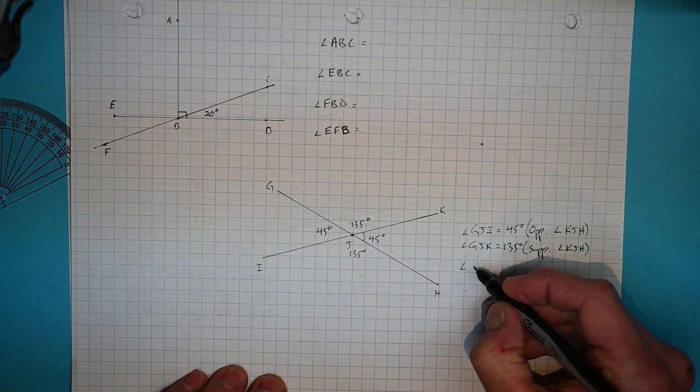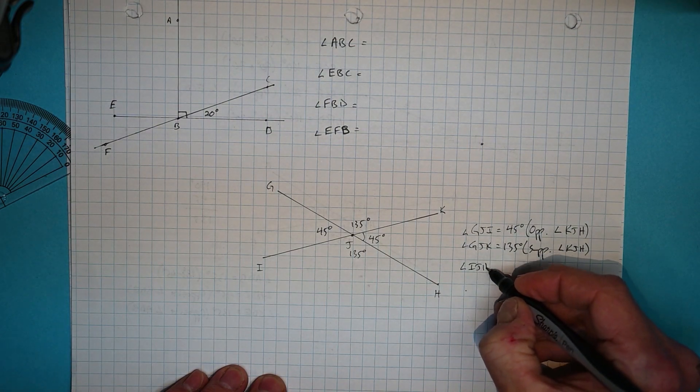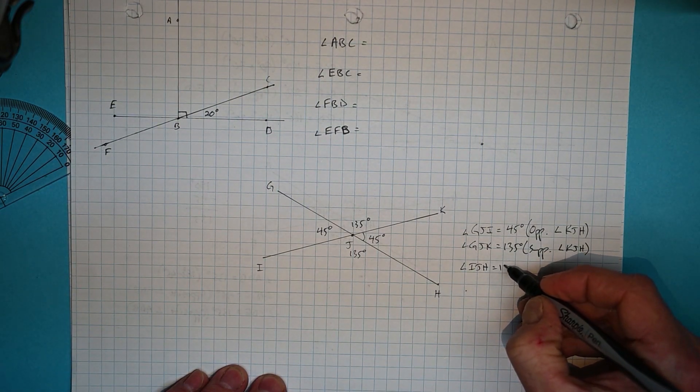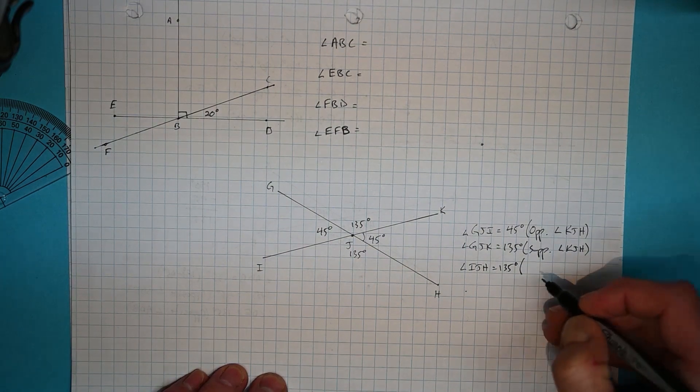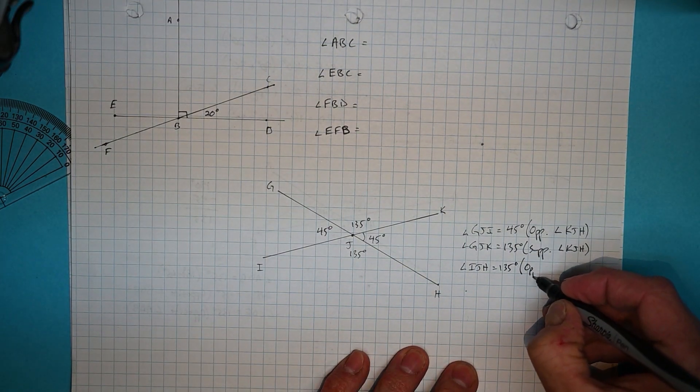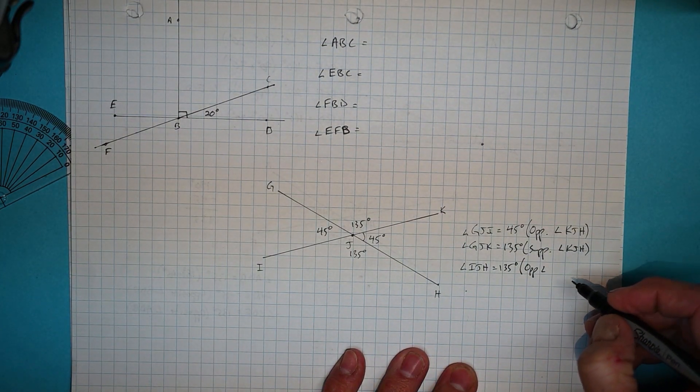And so we can say that angle IJH equals 135 degrees because it is opposite to angle GJK.